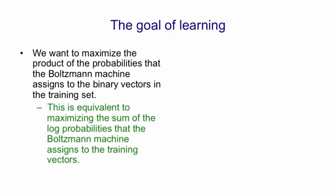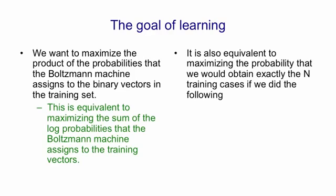What we want to do is maximise the product of the probabilities that the Boltzmann machine assigns to a set of binary vectors, the ones in the training set. This is equivalent to maximising the sum of the log probabilities that the Boltzmann machine assigns to the training vectors.